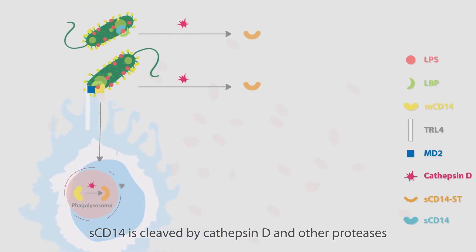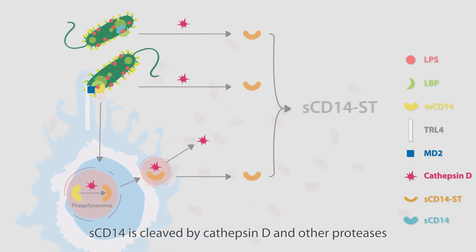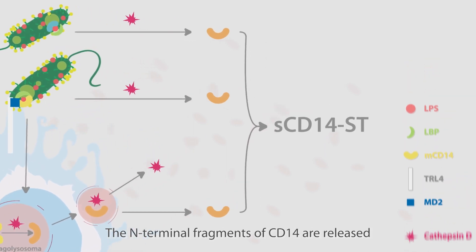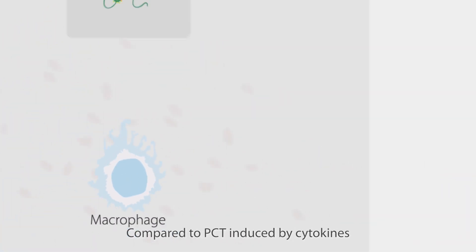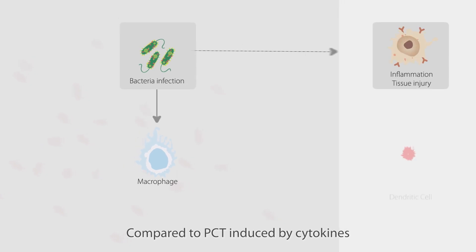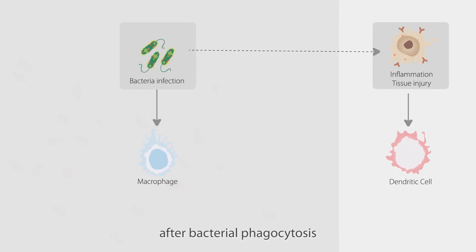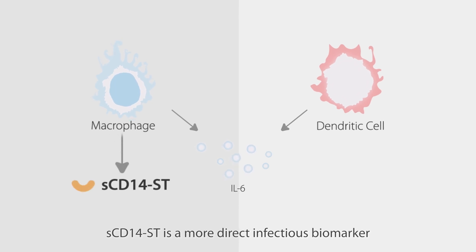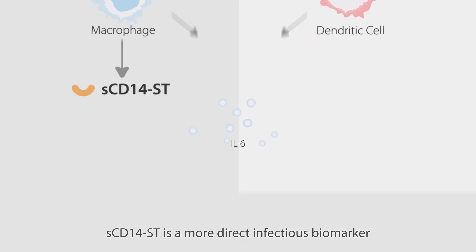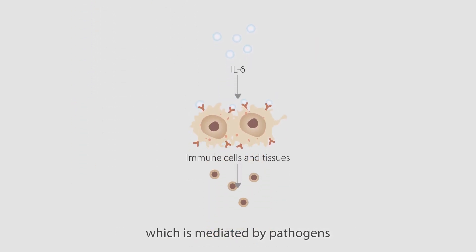SCD14ST is cleaved by cathepsin D and other proteases, and the N-terminal fragments of CD14 are released. Compared to PCT induced by cytokines after bacterial phagocytosis, SCD14ST is a more direct infectious biomarker which is mediated by pathogens.